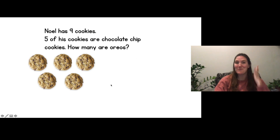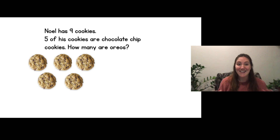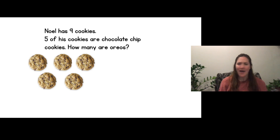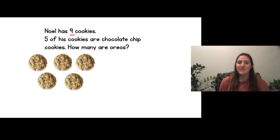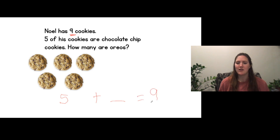Okay watch me solve this one. This one's about Noelle. Noelle has nine cookies. Five of his cookies are chocolate chip cookies. How many are Oreos? Noelle has nine cookies altogether, so he's supposed to have nine. These five are chocolate chip. So five chocolate chip plus how many Oreos equals nine.